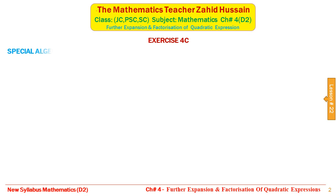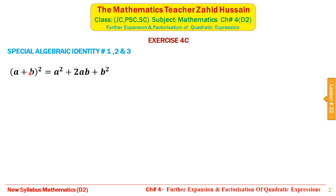The first algebraic identity is the square of the sum of two terms: (a + b)² equals a² + 2ab + b². When we expand this we get a² + 2ab + b². Factorization is the reverse of expansion — this is the expansion, and when we factorize this expression we get this form.